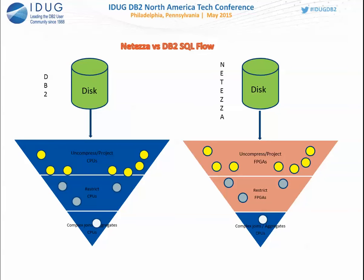Netezza tackles this differently. Between the disk and CPUs, you have a layer of FPGAs — field programmable gate arrays, a form of hardware accelerators. The FPGAs handle uncompressing, projecting, and restricting the data. CPUs do none of these tasks. By the time data reaches the CPU, the subset has been reduced to about 5-10% of the original. CPUs only handle aggregation and complex joins. That's why Netezza uses cheaper CPUs — it doesn't rely on them for heavy lifting.